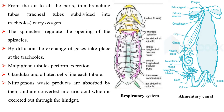By diffusion, the exchange of gases takes place at the tracheoles. Malpighian tubules perform excretion. Glandular and ciliated cells line each tubule. Nitrogenous waste products are absorbed by them and are converted into uric acid, which is excreted out through the hindgut. This insect is therefore called uricotelic.